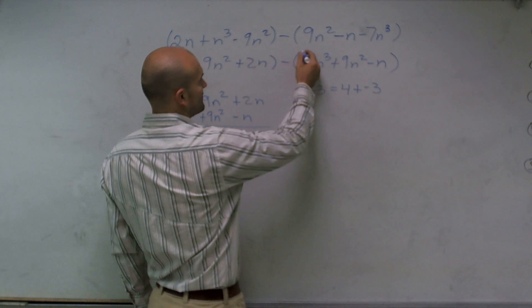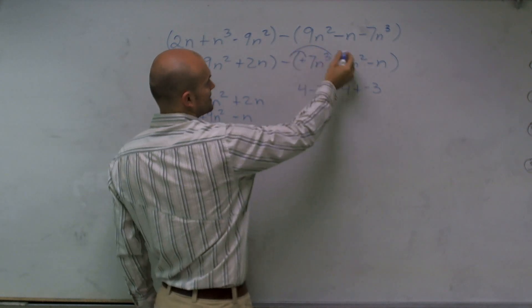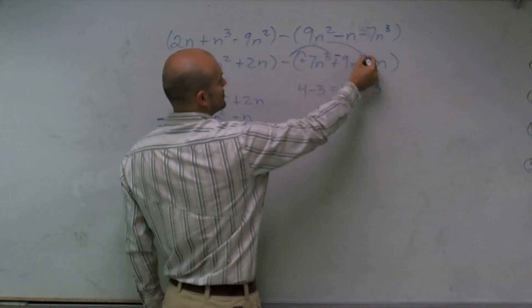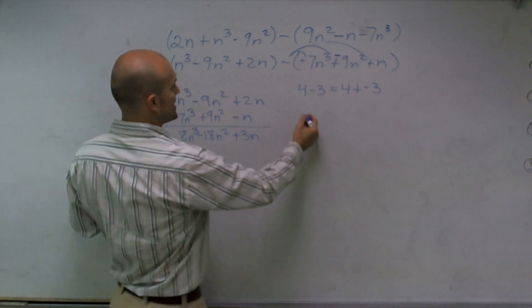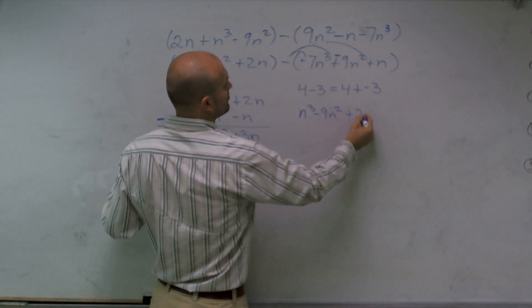So the first thing, if I distribute the negative sign, that's now going to become a positive. Distribute the negative sign over here, that's now a negative 9n. And distribute over here, now that becomes a positive n. So I'm going to do the same thing again. I'll have n cubed minus 9n squared plus 2n.